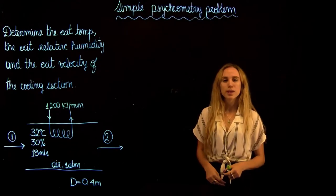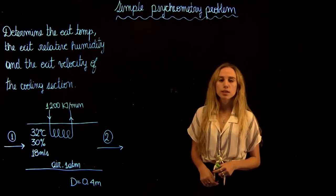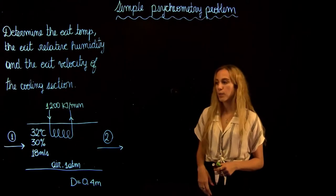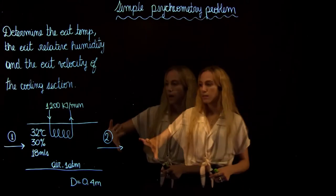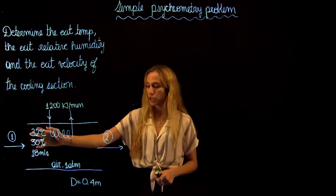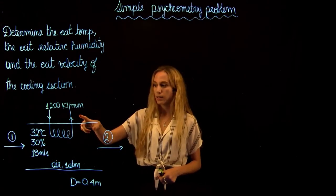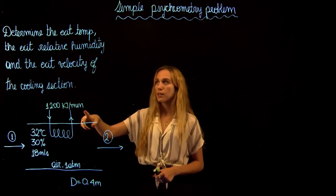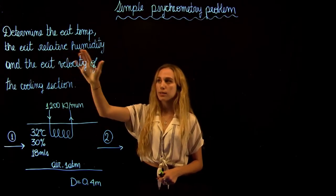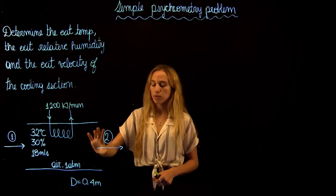Hi everyone and welcome to Thermodynamics 2 Tutorials with Maria. We're going to be solving a simple psychrometric problem. We are given a cooling section with certain inlet temperature conditions, a cooling heat out, and we are asked to find the exit temperature, the exit relative humidity, and the exit velocity of the cooling section.